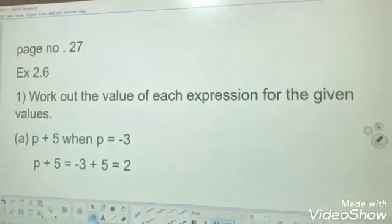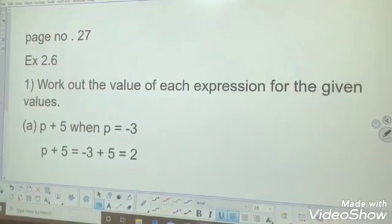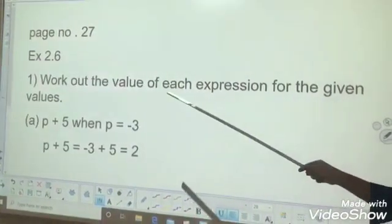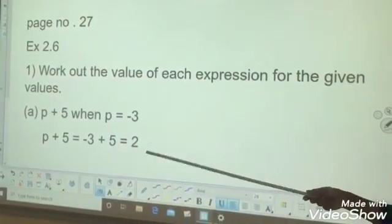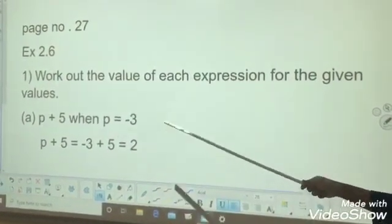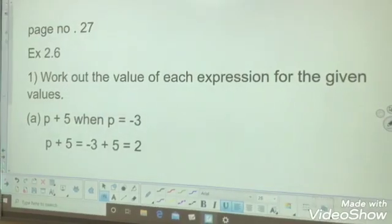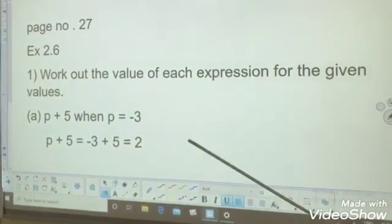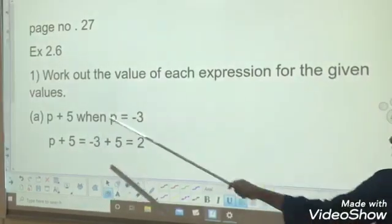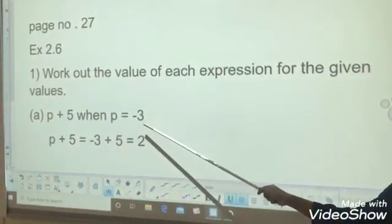One more question from exercise. Work out the value of each expression for the given values. This will be the question. See the first question: p plus 5 when p equals minus 3. Expression is given and the value for p is also given. What do you do? p plus 5 is the expression. The value of p is given as minus 3, so instead of p, we will put minus 3.